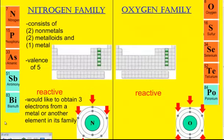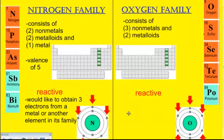On the other side, group number 16 is the oxygen family. The oxygen family consists of three non-metals and two metalloids. The non-metals are oxygen, sulfur, and selenium, and the two metalloids are tellurium and polonium.